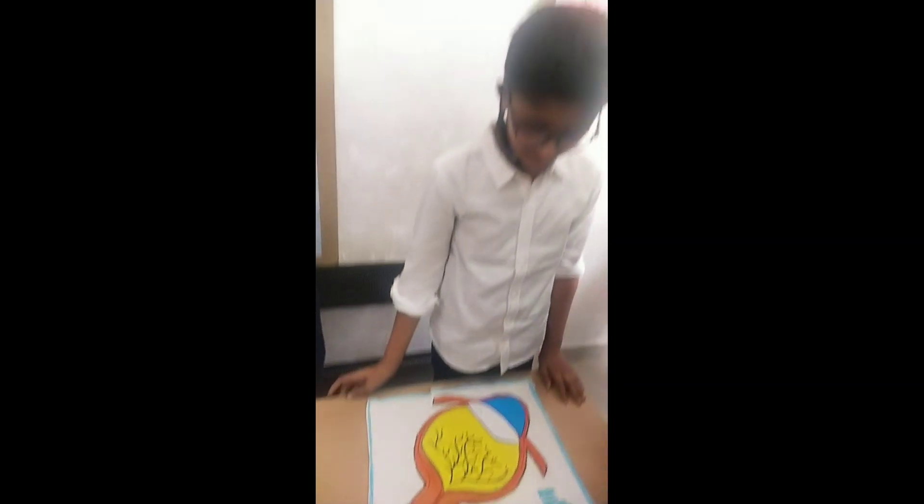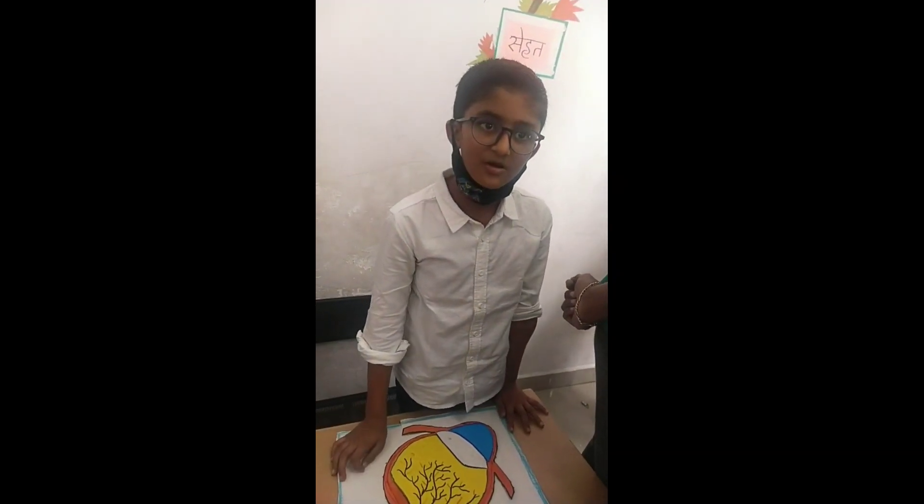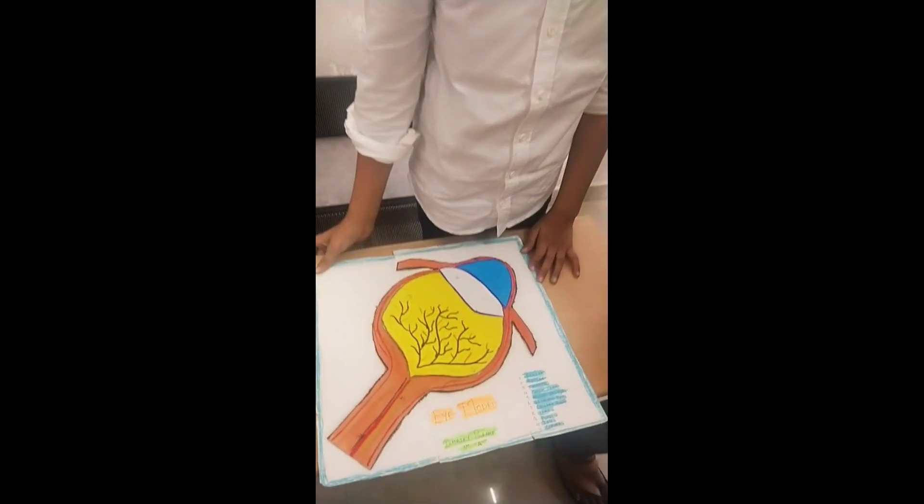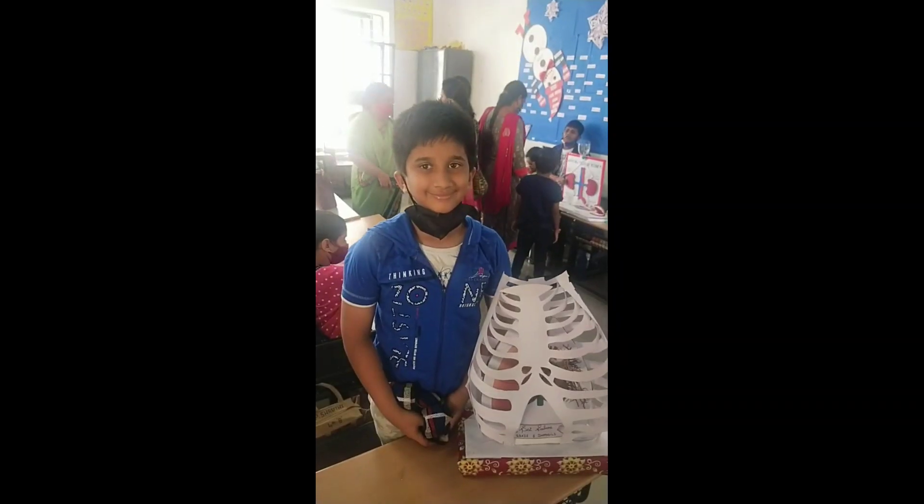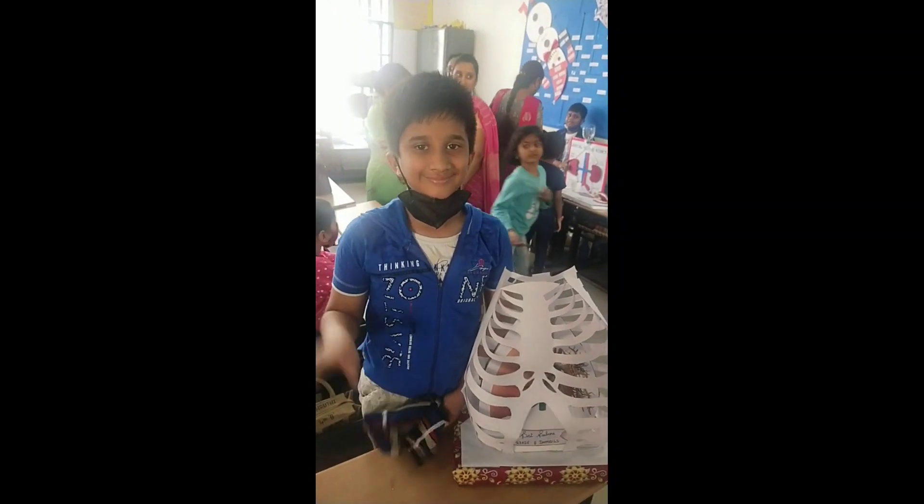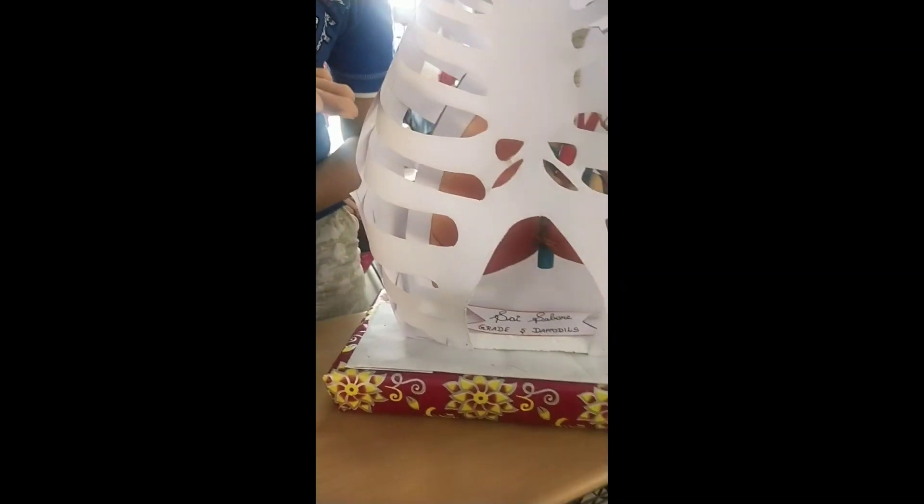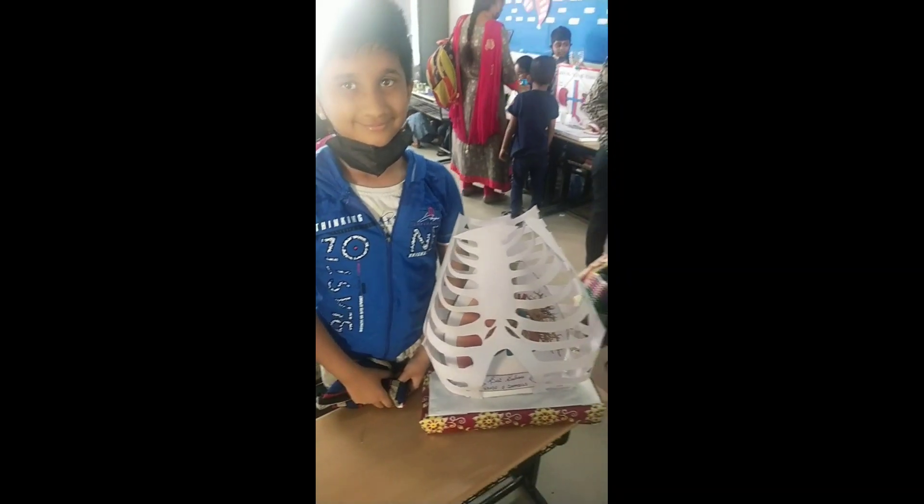And my friend was explaining about the eye. The brain gets information from the optic nerve which the eye is sending. And my another friend made a ribcage model which is protecting the heart and it is made out of paper. Wow, how innovative.